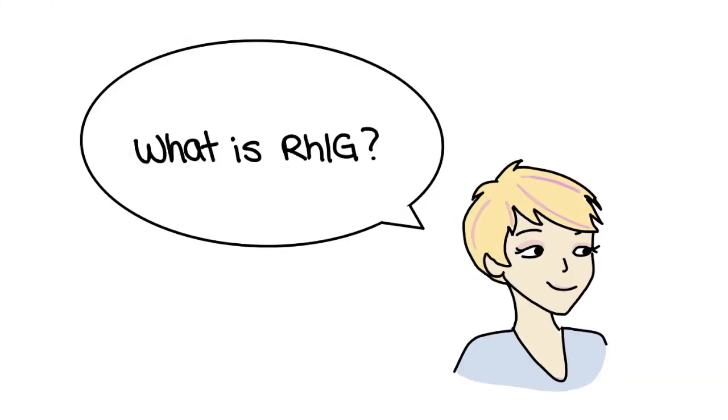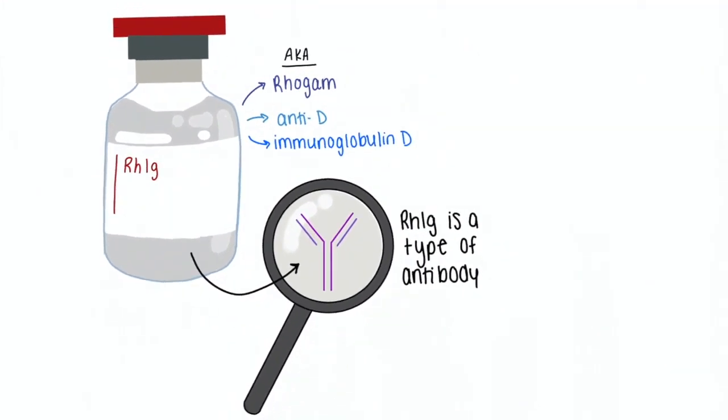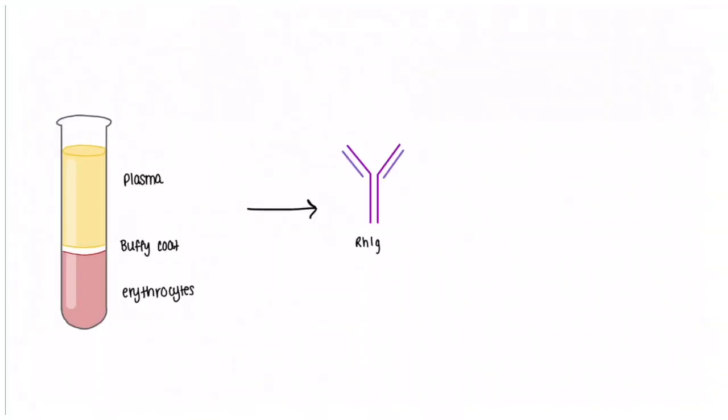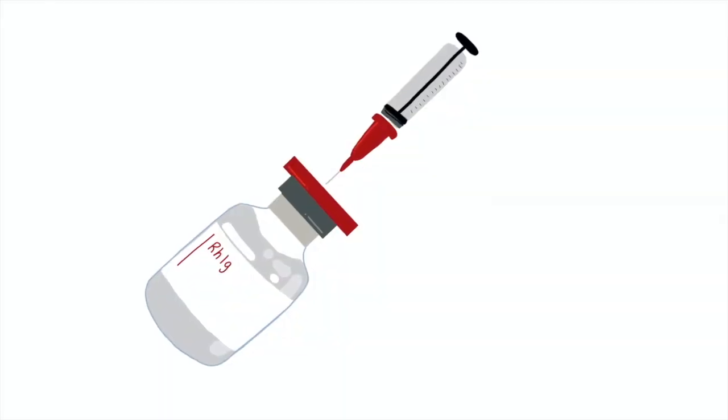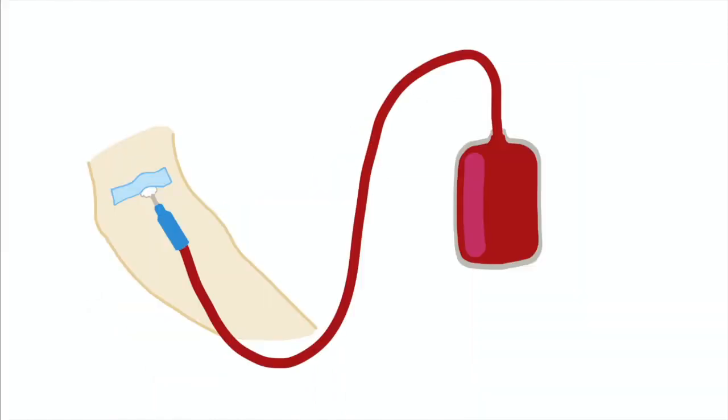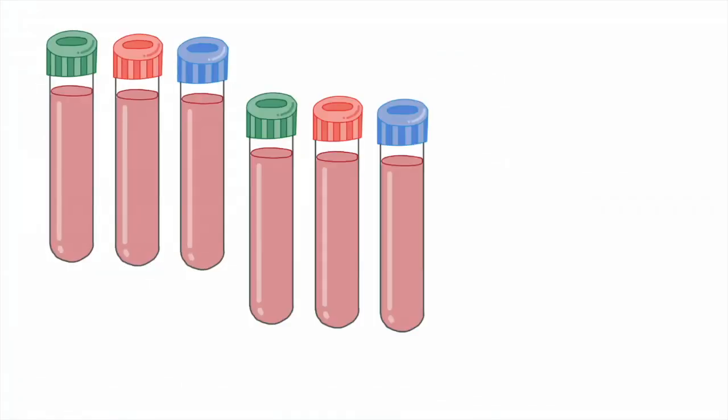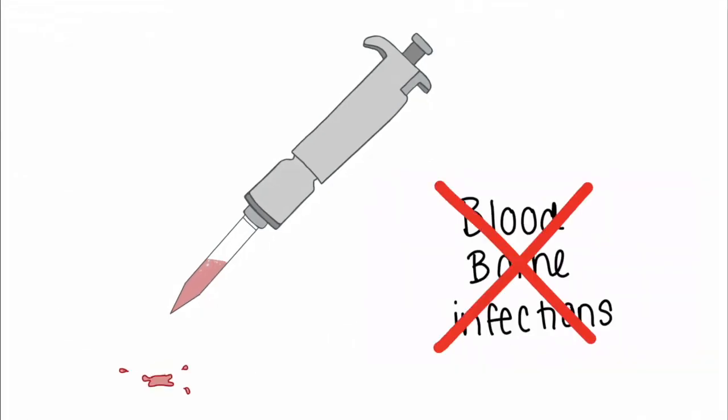What is RHIG? RHIG, which is also known as RoGAM, anti-D, or immunoglobulin D, is a type of antibody. RHIG is obtained from the part of human blood known as plasma and it is given through an injection, either into your veins (IV) or into your muscles (IM). Although RHIG comes from human blood, donors are strictly screened. In Canada, it has never been associated with bloodborne infections such as hepatitis B or C.